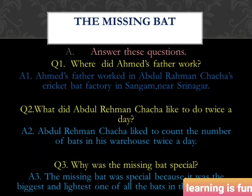Now we will start with the answers to the questions of the lesson 'The Missing Bat.' The first question is: where did Ahmad's father work? The answer is: Ahmad's father worked in Abdulrahman's cha-cha's cricket bat factory in Sangam, near Srinagar. The second question is: what did Abdulrahman's cha-cha like to do twice a day?